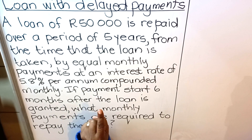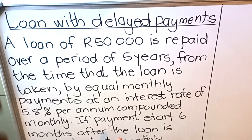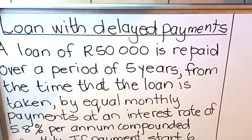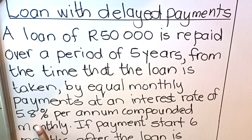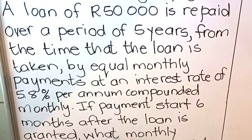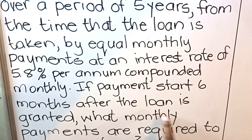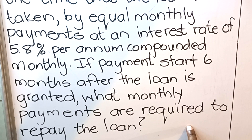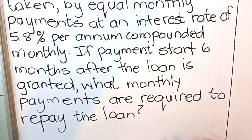A loan of R50,000 is repaid over a period of five years from the time that the loan is taken, by equal monthly payments at an interest rate of 5.8% per annum compounded monthly. If payments start six months after the loan is granted, what monthly payment is required to repay the loan?